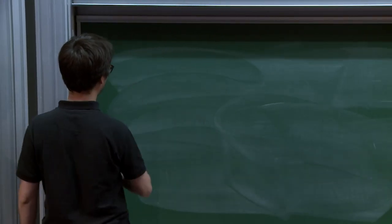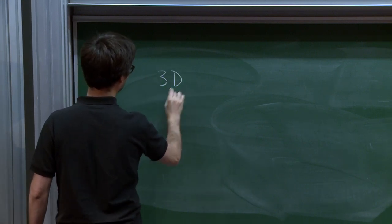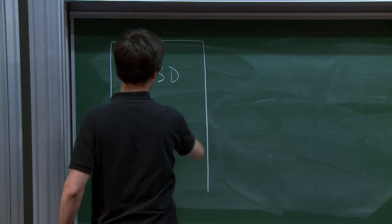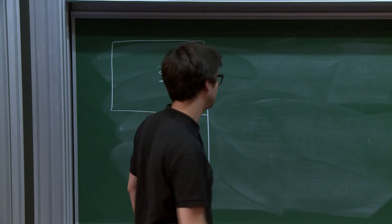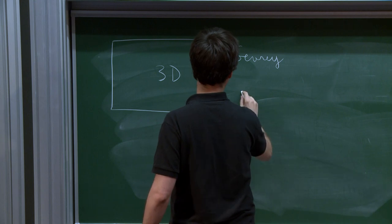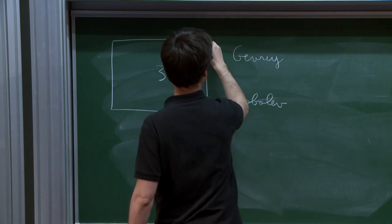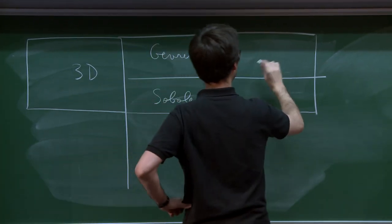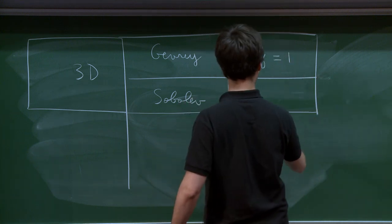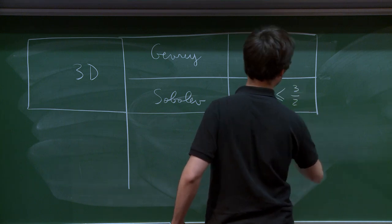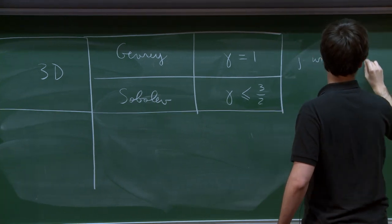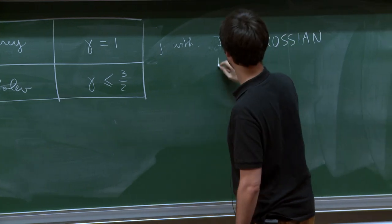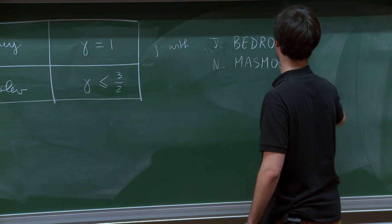Now let me describe our results. So this is, so maybe let me first, let me start by talking about the 3D case. And then I'm going to say a word about what happens in 2D. So in the 3D case, there is two topologies that you can consider, either Gevrey topology or Sobolev topology. So in Gevrey topology, we found gamma equals one. And in Sobolev topology, we found gamma less than or equal to three halves. So this is a joint work with Jacob Bedrossian, who's in Maryland, and Nader Masmoudi, who's at NYU.